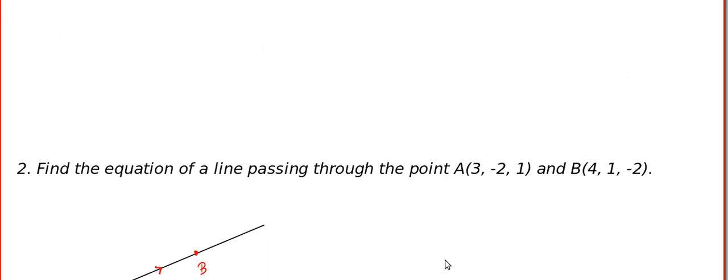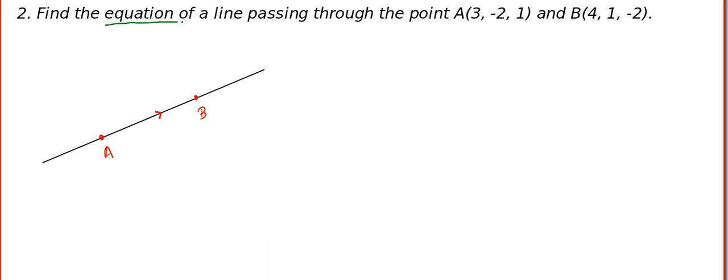Now let us go to another problem. They are asking you the equation of a line. We are doing basic problems. Equation of a line means you should be capable of writing Cartesian, parametric, and vector form. When we do complex problems, according to the problem, you will be using one of them. Normally Cartesian and parametric will be more than enough.